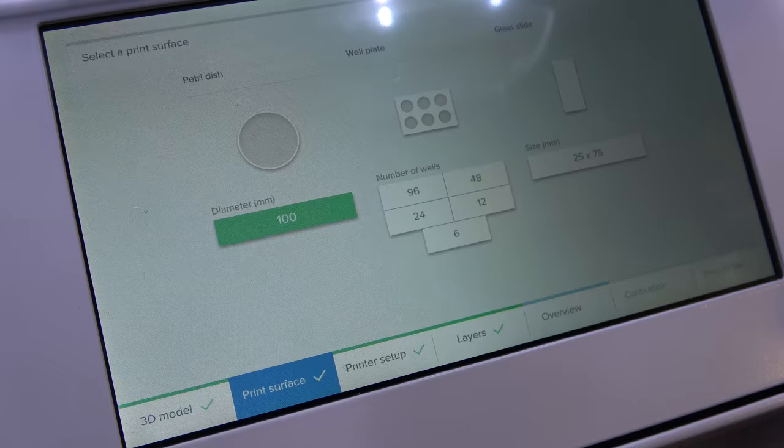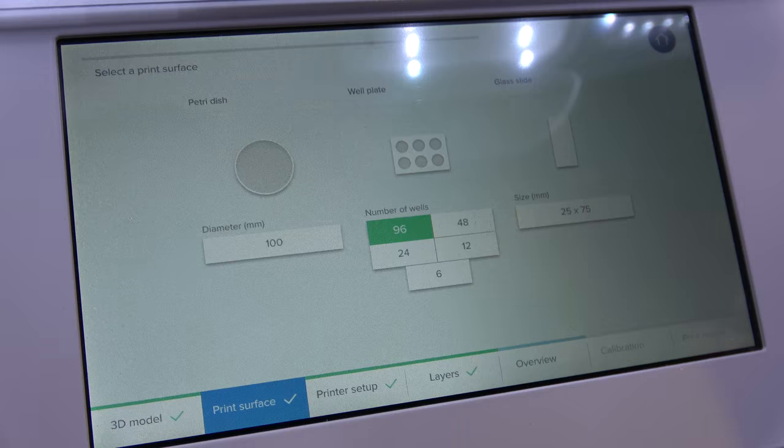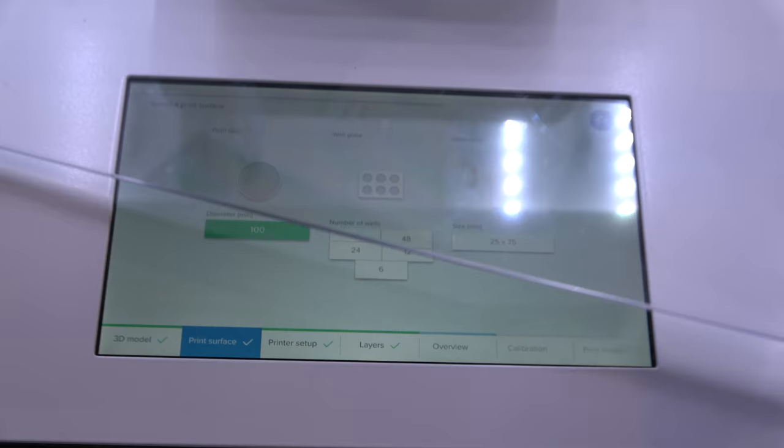Then you move forward to the print surface and then you can either choose to print in a regular Petri dish or, for example, a 96-well plate. In this case, we're going to print with a Petri dish. Just this one here.